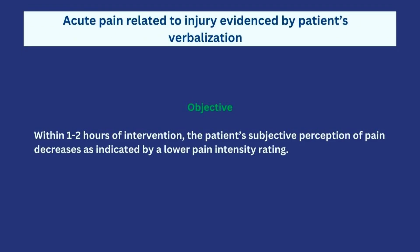Now that we understand the nursing diagnoses and how they were developed, let's go over the nursing interventions, scientific rationale, and evaluation. For the first diagnosis — acute pain related to injury — our objective is that within one to two hours of intervention, the patient's perception of pain will decrease as indicated by a lower pain intensity rating. I'm using one to two hours because a femur fracture takes time to respond to interventions, so I'm being realistic.